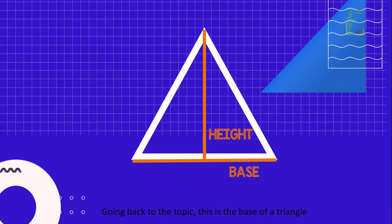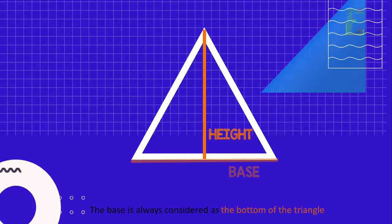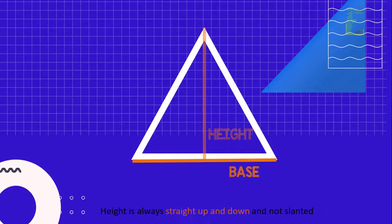Going back to the topic, this is the base of a triangle. The base is always considered as the bottom of the triangle. And this is the height of the triangle. Height is always straight up and down and not slanted.